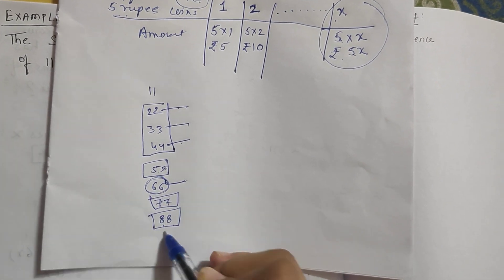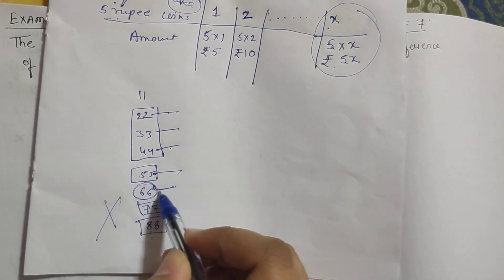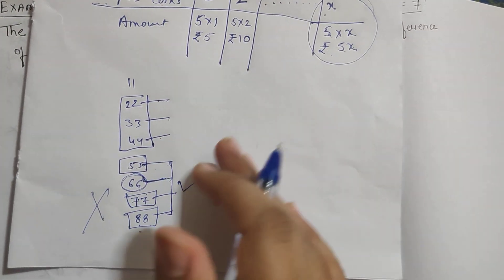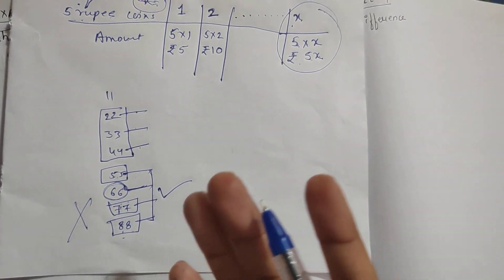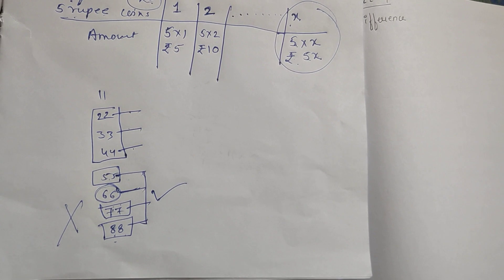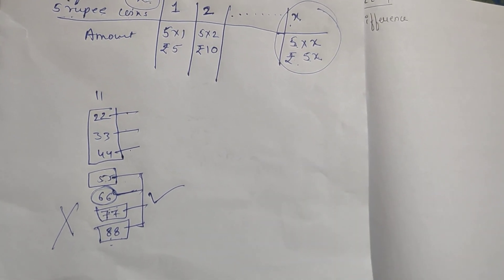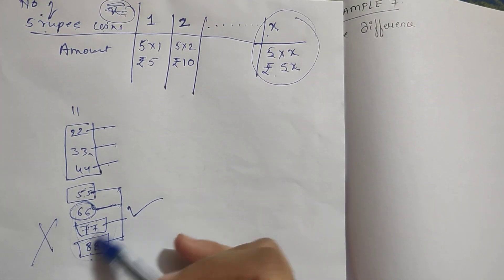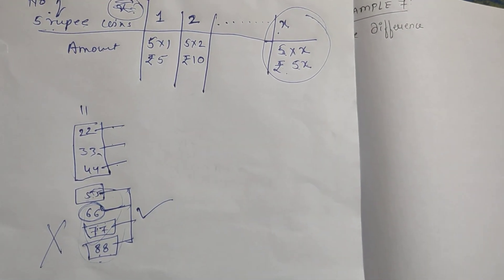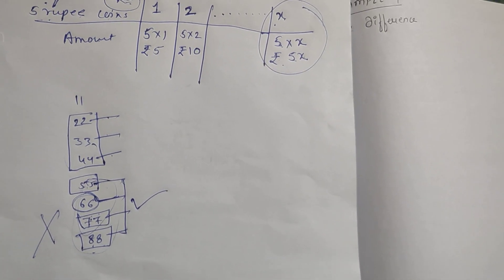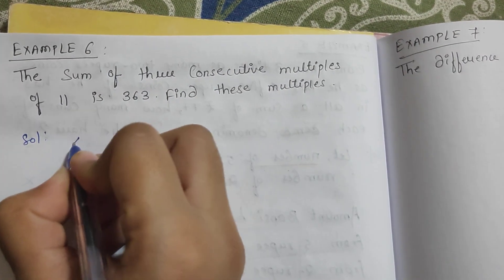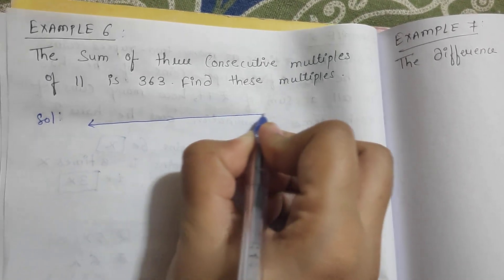If we say 55, 66, 77, 88, then they are consecutive. So consecutive means continuous — without leaving any multiple. Since we don't know which three multiples add up to 363, we solve this using a variable.